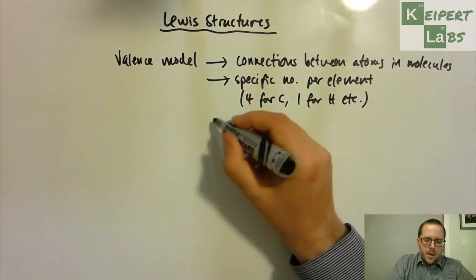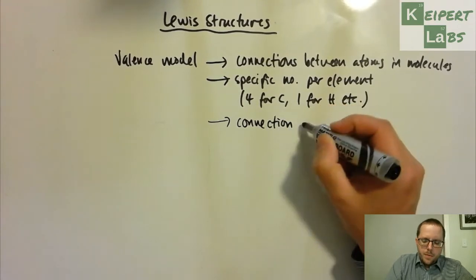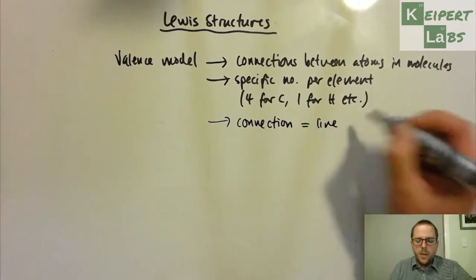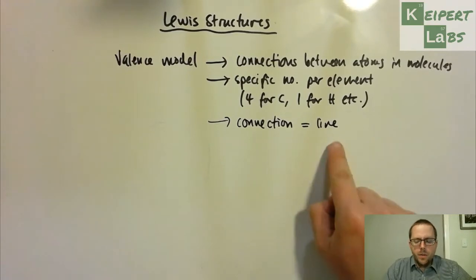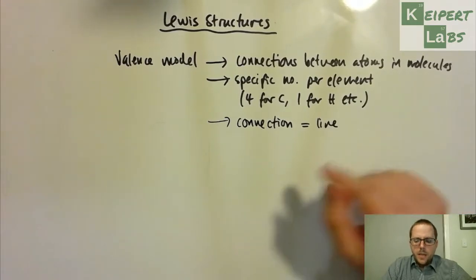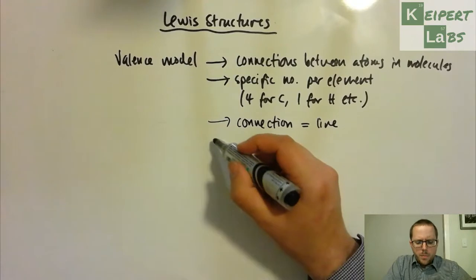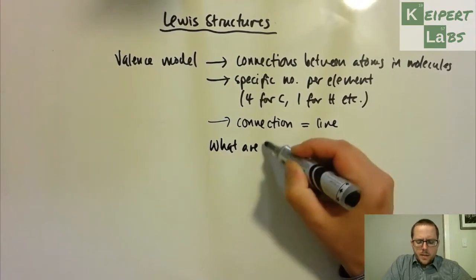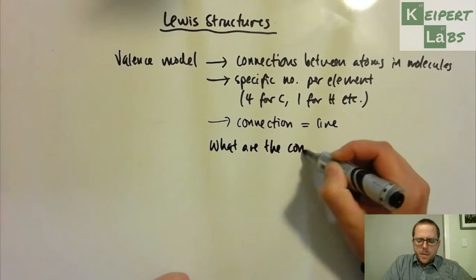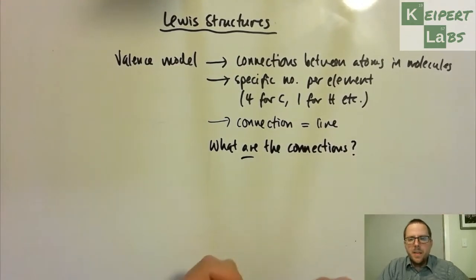And then we looked at this idea that with structural formulae that we could represent each particular connection as a line, horizontal or a vertical line, or just a straight line. Let's generalize it that way. But the problem that we have is that we've established the idea that these connections exist, but we have no actual mechanism to explain what are they? How are these atoms physically connected together?